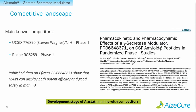Looking at the competitive landscape, there are fewer than a handful of competitors. Roche has a compound in phase one, and there is another compound from the University of California, San Diego, also currently in phase one. With our compounds in preclinical development, we think we are quite in line with the competition. Of interest, Pfizer has published data with an earlier compound showing that gamma secretase modulators can indeed display both potent efficacy and good safety.